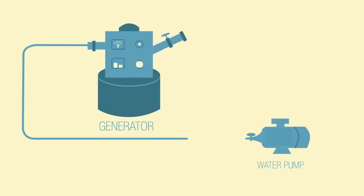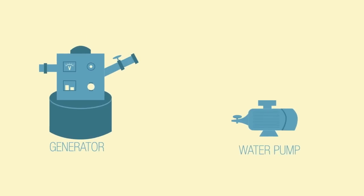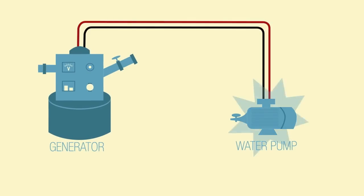The generator runs on a closed loop. The water pump keeps the water moving through the generator, which in turn keeps the generator generating. The pump uses just a little bit of that electricity to keep the water moving. It's that simple and it really works.